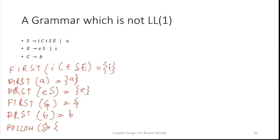Next we have to calculate FOLLOW. FOLLOW of S: S is the starting symbol, so dollar will come definitely. And you can see S is on the right-hand side here also, so this S is followed by E. So FIRST of E will also be in FOLLOW of S. FIRST of E is basically small e, so small e will come here.